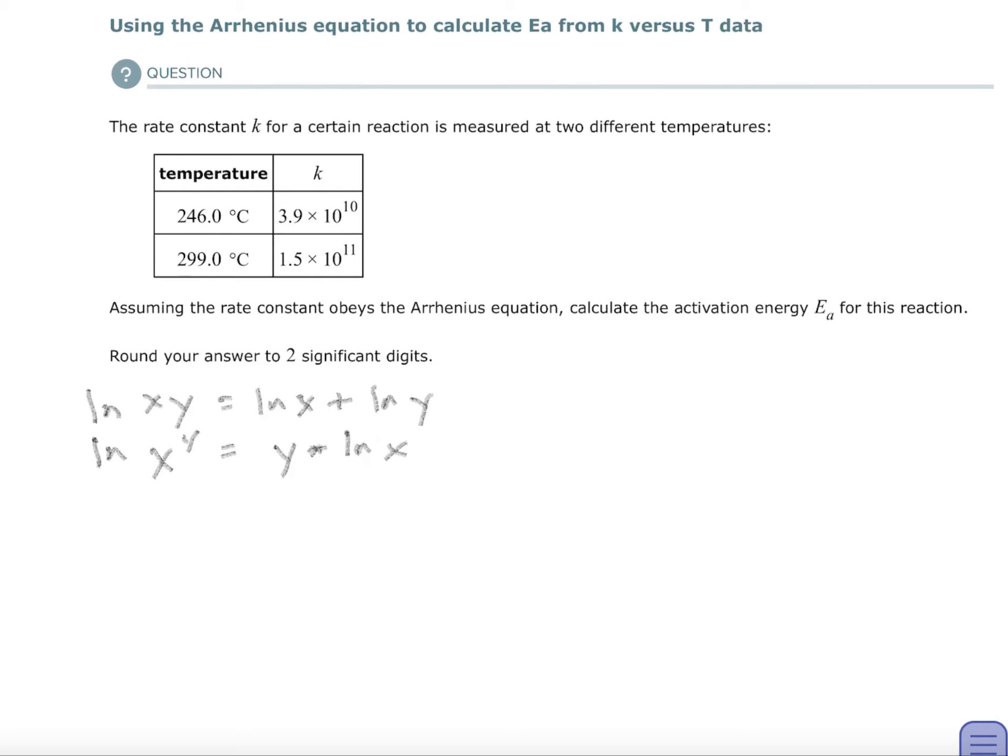Welcome back. This is an Alex homework video on using the Arrhenius equation to calculate EA from K versus T data.